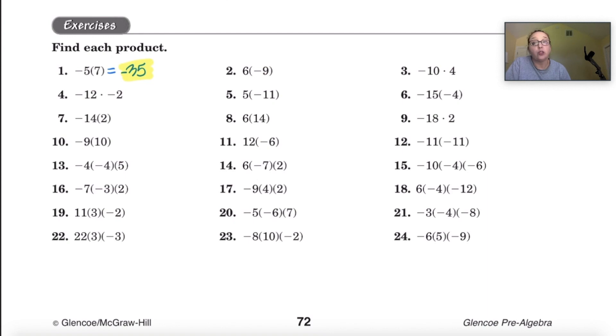Let's go to number 2. 6 times negative 9. Well 6 times 9 is 54. Since their signs are different that's going to be negative 54.